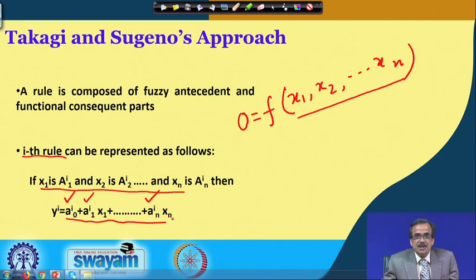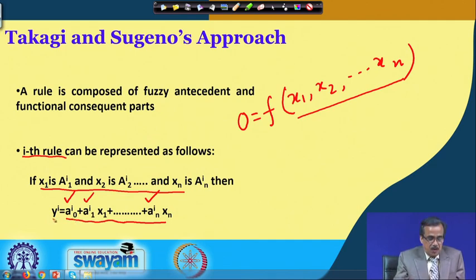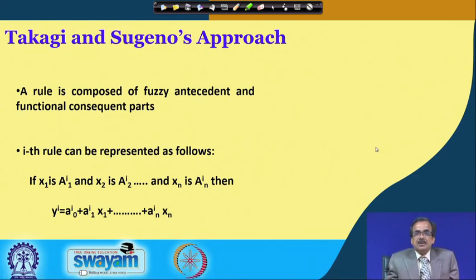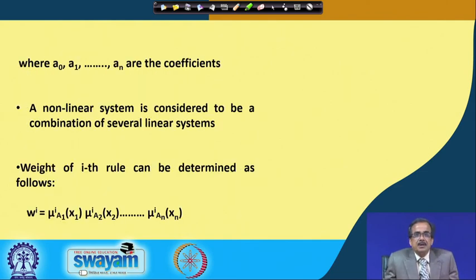Generally, we use an optimization tool known as the least squares technique to find the values of the coefficients. The output can be seen as a linear function of the input parameters, and that is why this approach can be termed as non-linear — for a non-linear system, we approximate it by a number of linear systems. This is essentially the representation of a non-linear system as a combination of several linear systems.